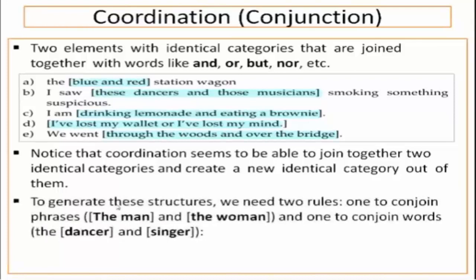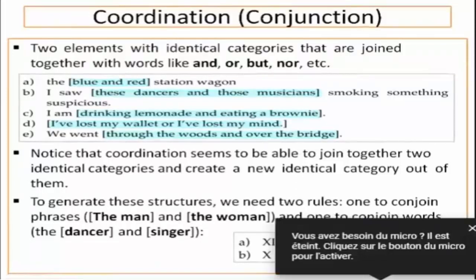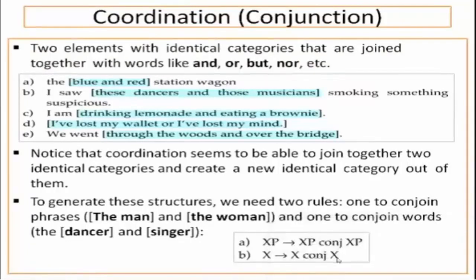To generate these structures, we may need two rules: one to conjoin phrases — for example, 'the men and the women' — and one to conjoin words — for example, 'dancer and senior'. This means we need one rule for XP and one rule for X. One for the lexical category and one for the phrasal category. These are the two rules: XP → XP conjunction XP, or when you have only lexical categories, X → X conjunction X.